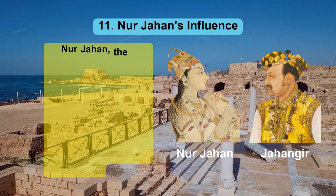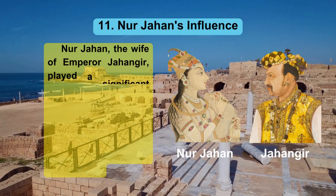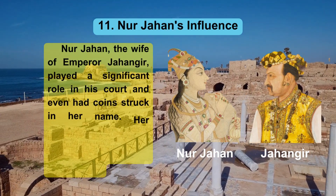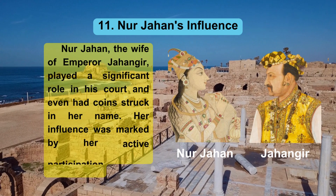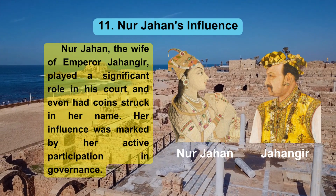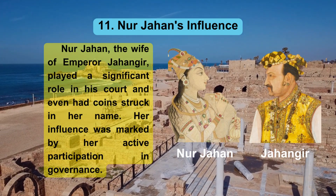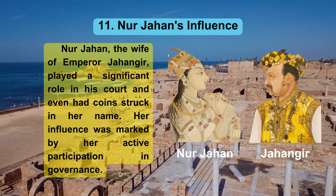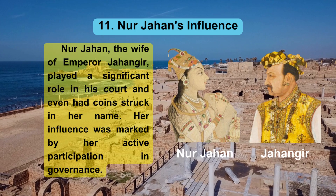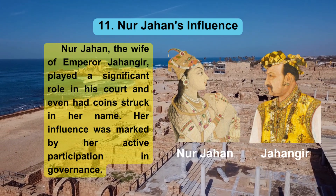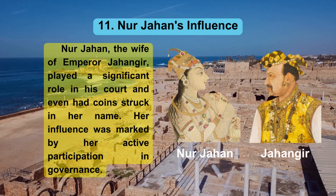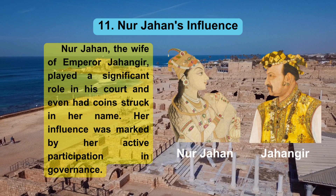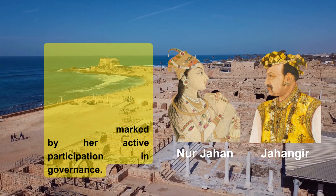11. Noor Jahan's Influence. Noor Jahan, the wife of Emperor Jahangir, played a significant role in his court and even had coins struck in her name. Her influence was marked by her active participation in governance.